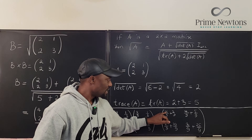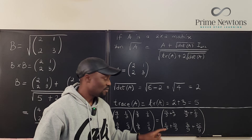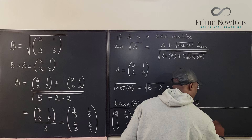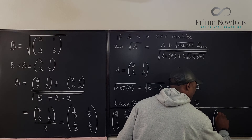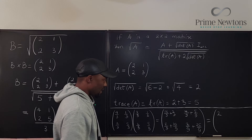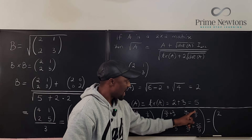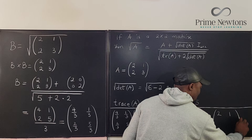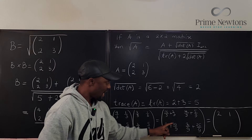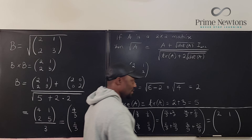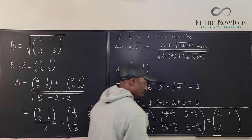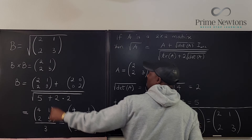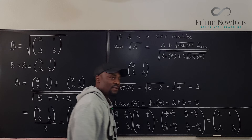Now let's add them up — all denominators are 9. 16 plus 2 is 18, and 18 divided by 9 is 2. The top-right is 9 over 9, which is 1. The bottom-left is 18 over 9, which is 2. And the bottom-right is 27 over 9, which is 3. That gives us the matrix 2, 1, 2, 3 — exactly the original matrix. So we've confirmed the formula works.